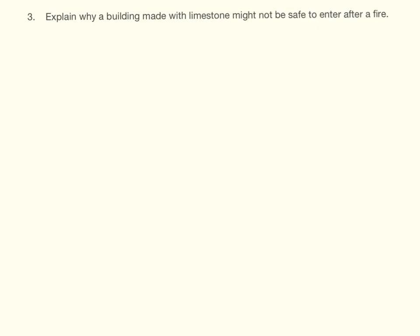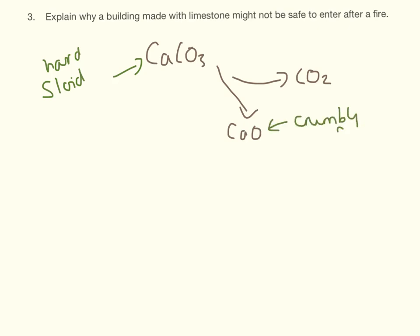So explain why a building made with limestone might not be safe to enter after a fire. For this you need to know your limestone cycle. So we have limestone, when we heat it up it turns into calcium oxide and we have the carbon dioxide which goes away here. Now hopefully you've done this experiment in the lab, and what you should recognize is that limestone is a very hard solid and that calcium oxide is a crumbly solid.